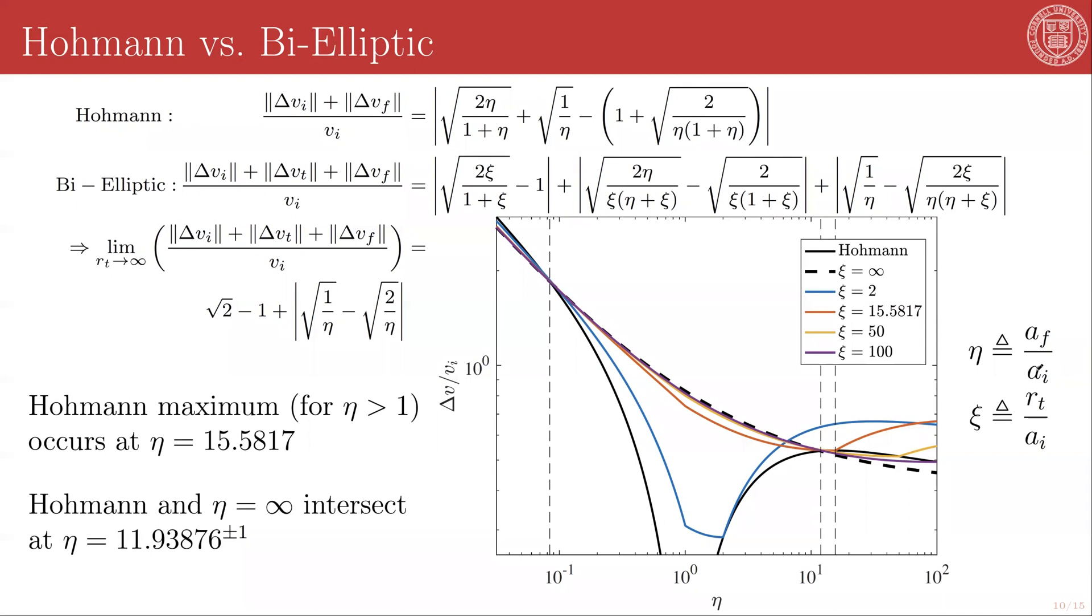In the case of a bi-elliptic transfer, however, you could go out all the way to infinity and come back or go out to any distance and come back. There's no reason to do so. But the math supports non-zero values for this quantity for bi-elliptic transfer when eta is 1. The dashed black curve here represents the bi-elliptic transfer performance for this limiting case of xi equal to infinity, which is equivalent to r_t going to infinity. And then the remaining colored curves are the performance of the bi-elliptic transfer for specific values of xi.